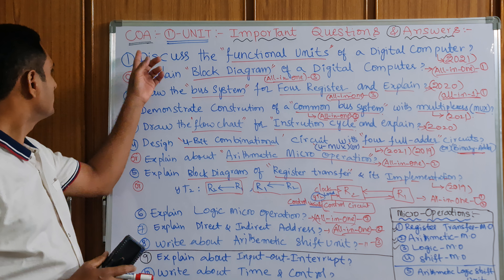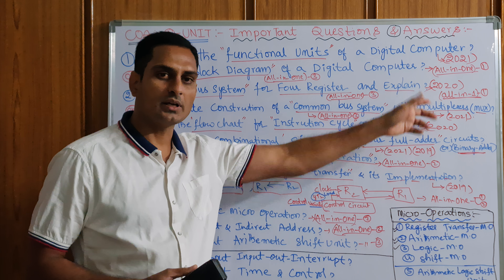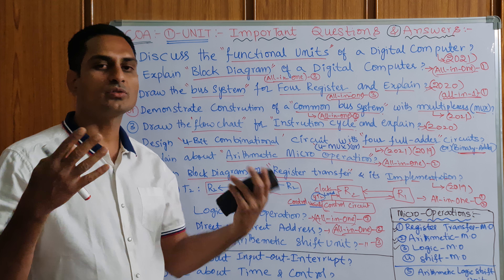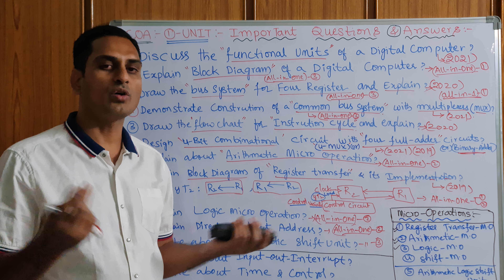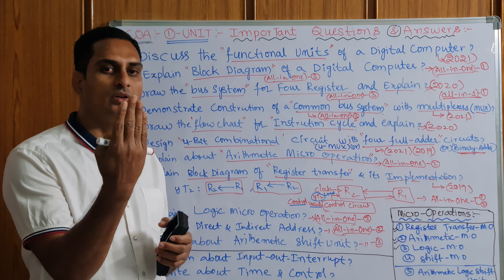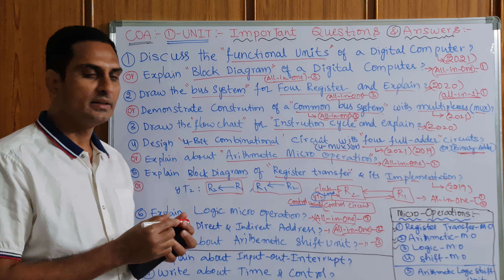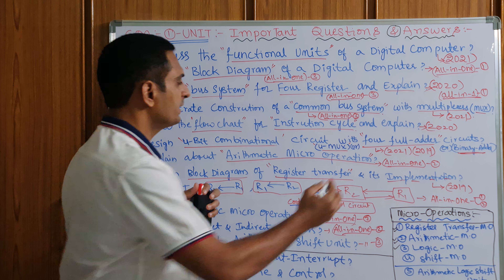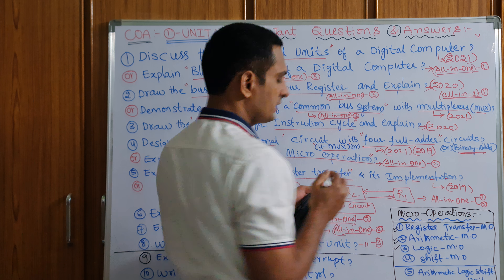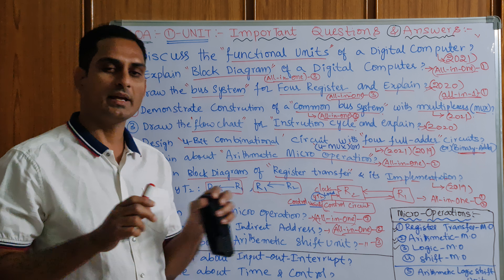First unit important questions and answers I will provide in my description channel if you want. If you don't know how to see the description channel, make your phone into vertical and drop down — a dropdown list is there. If you drop down that, you will find the description box there.